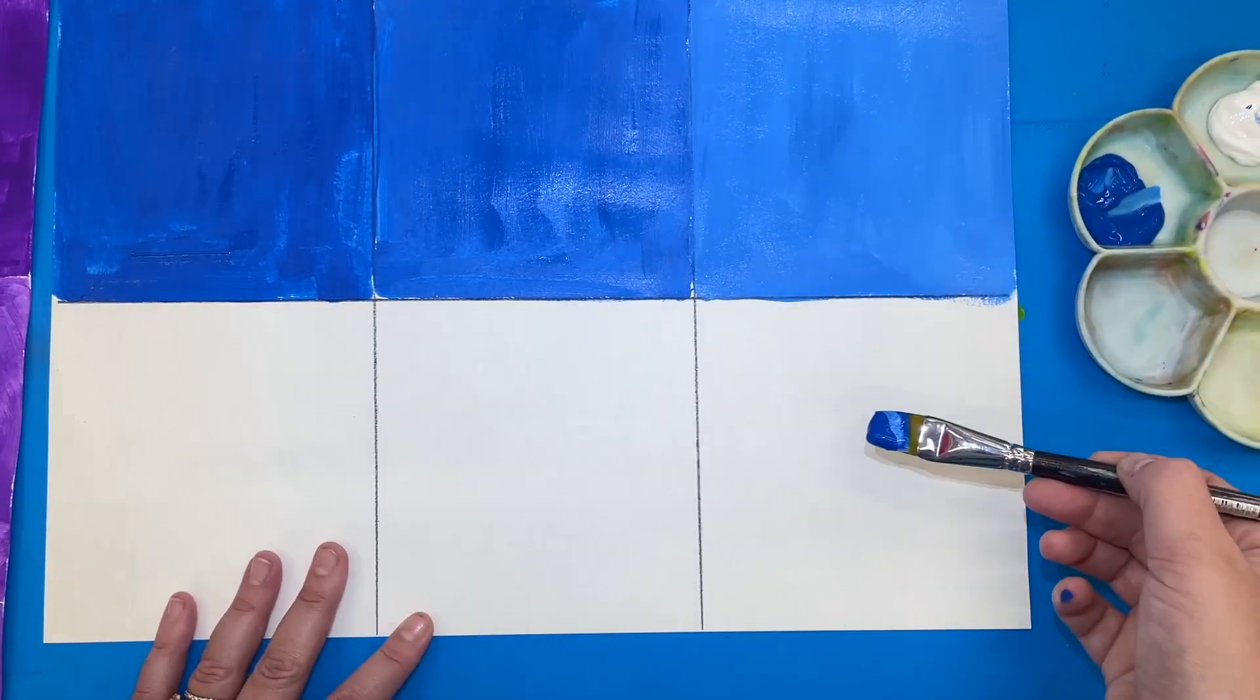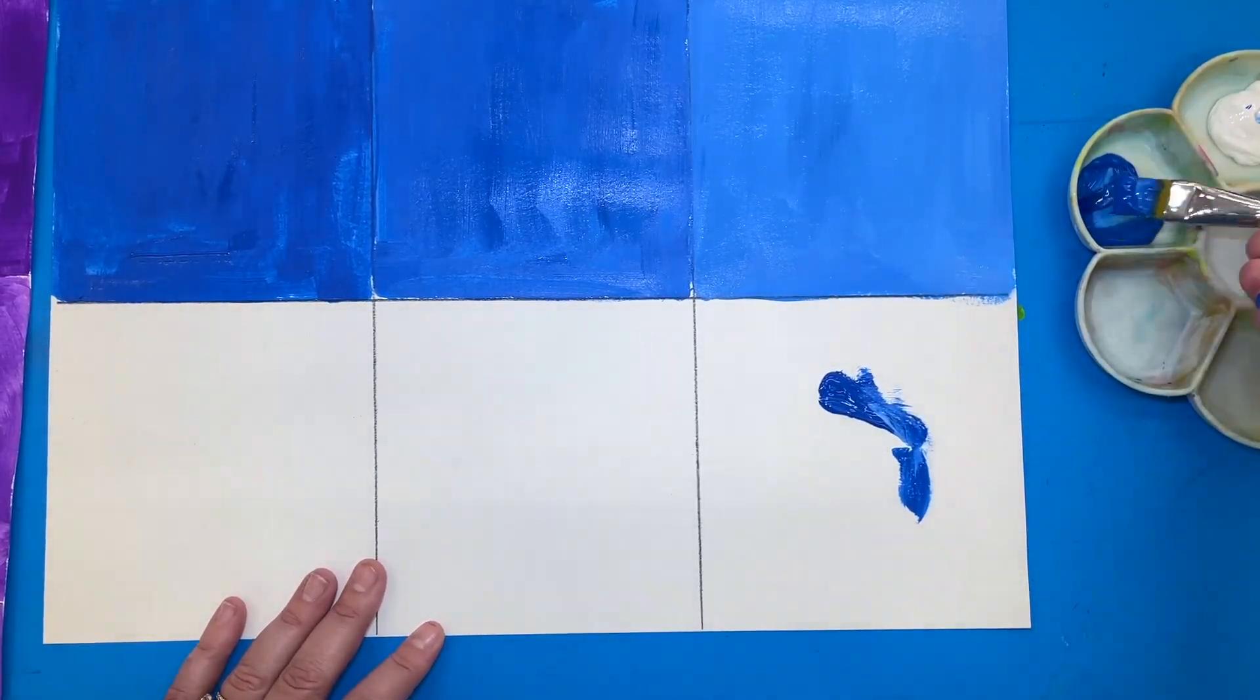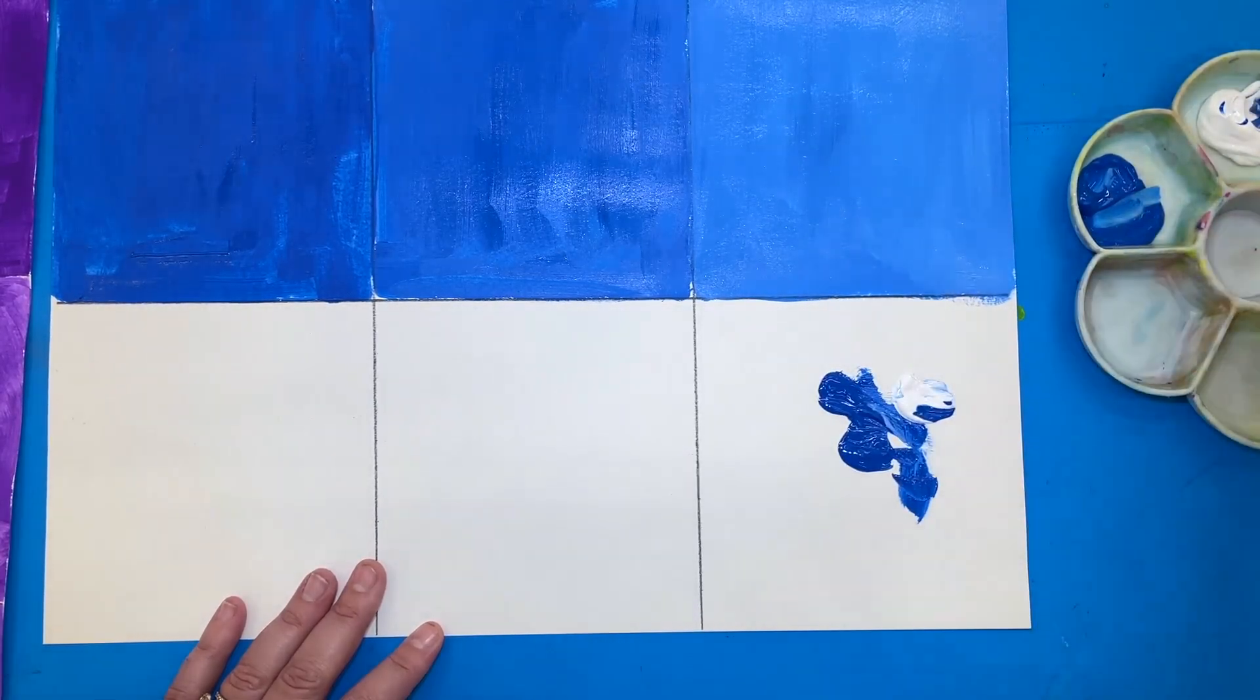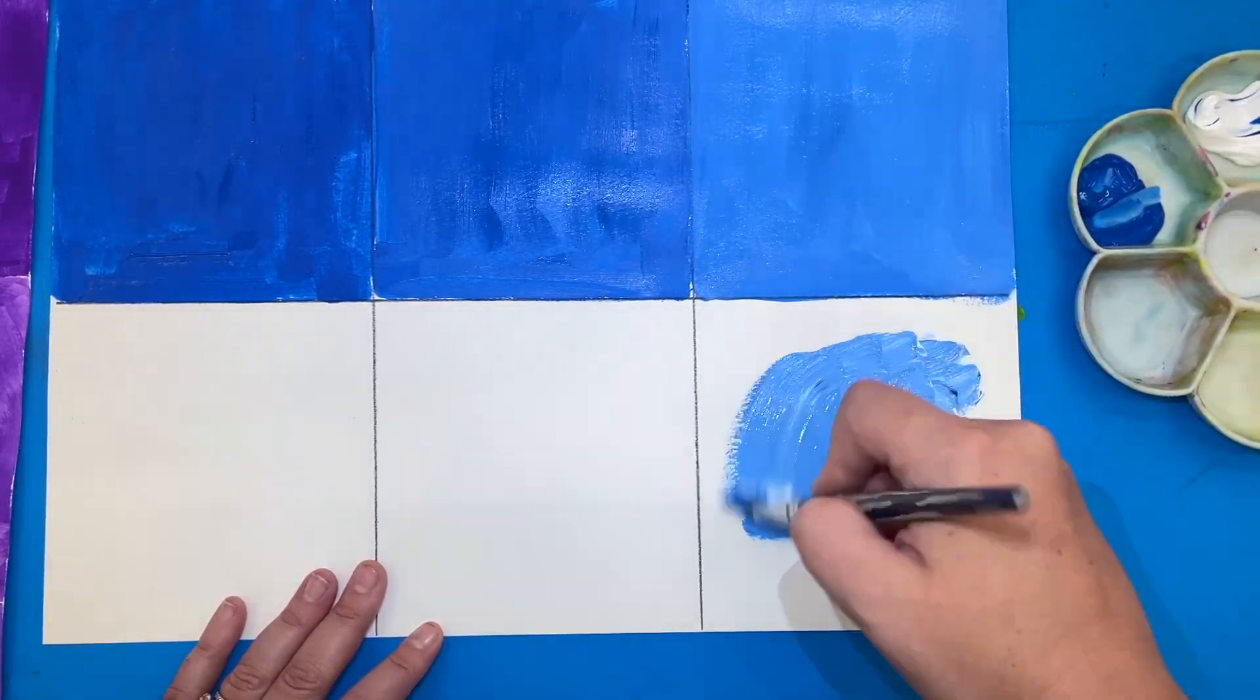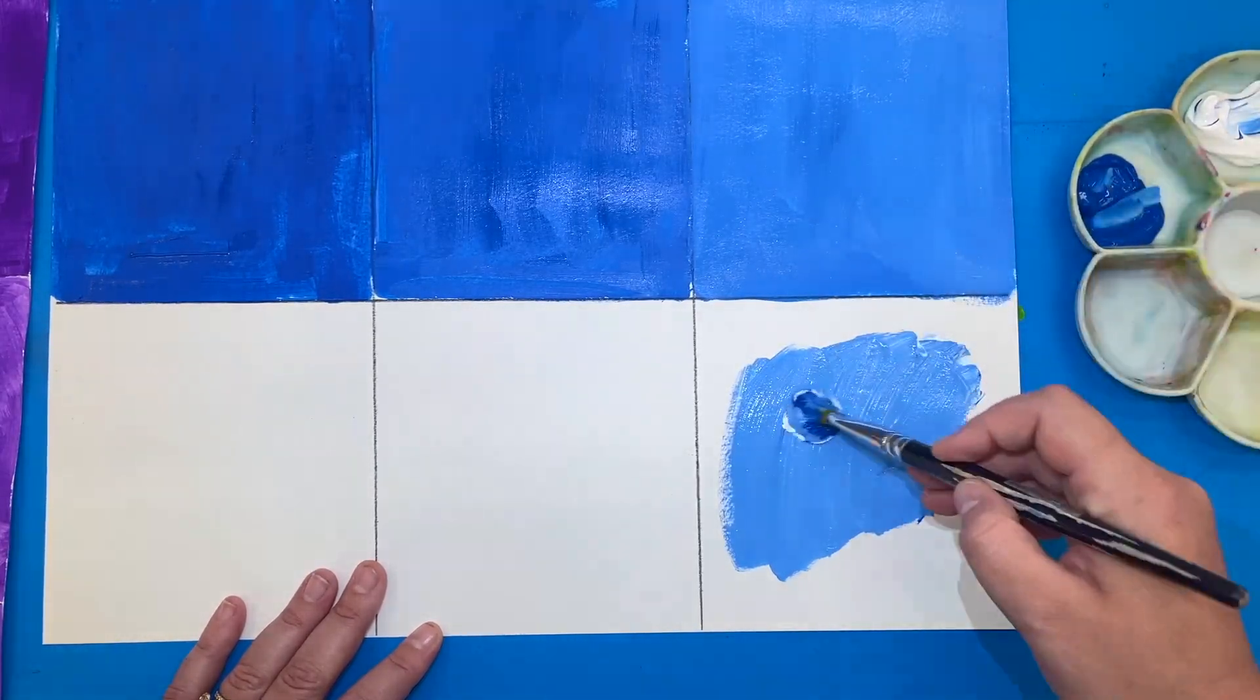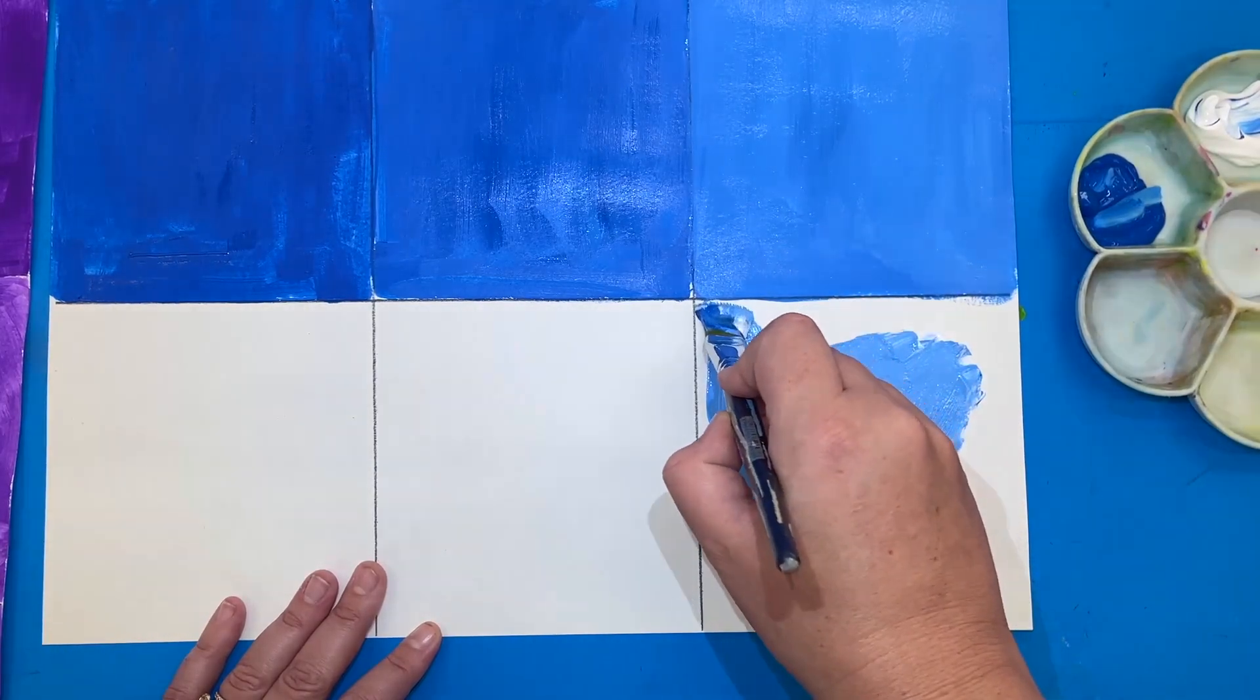Again at this square we're going to do about 50-50. So we're going to take the same amount of blue as we are going to take the white. You want a good amount of paint and work quickly because when your paint is wet that's when it mixes. If you're noticing that it's a little bit too close to the one above it, take some more white and mix further before spreading it all out.